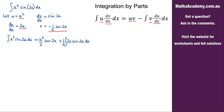Notice that the 2 here will cancel with the one half, so now I've got another integral to deal with: the integral of x cosine 2x with respect to x.